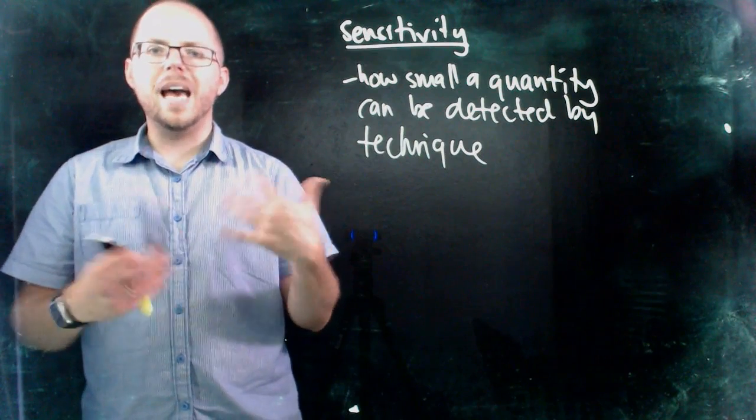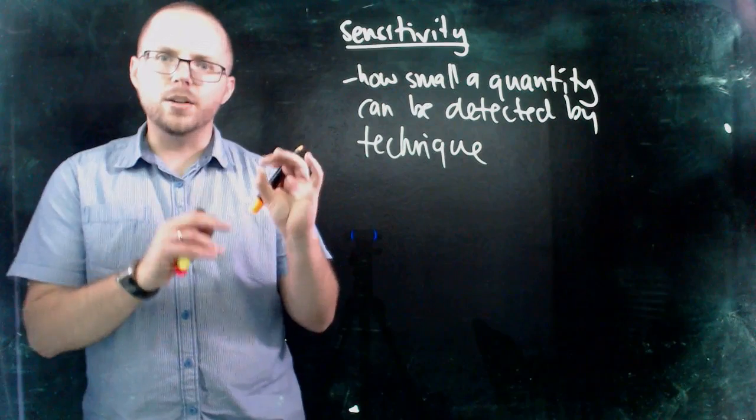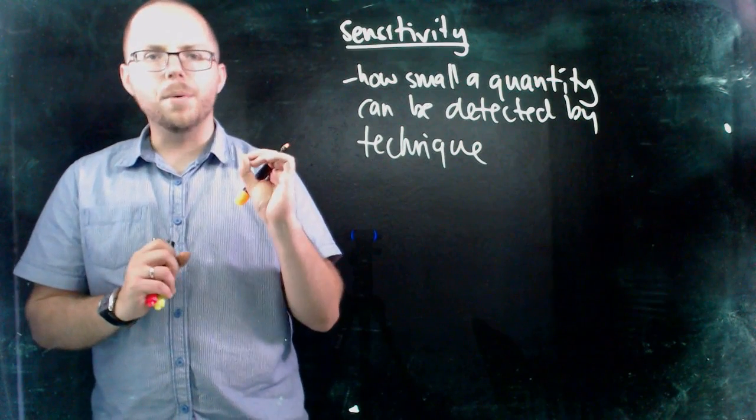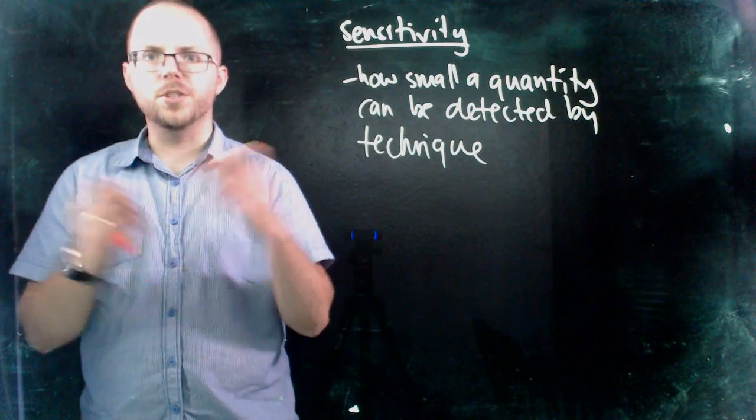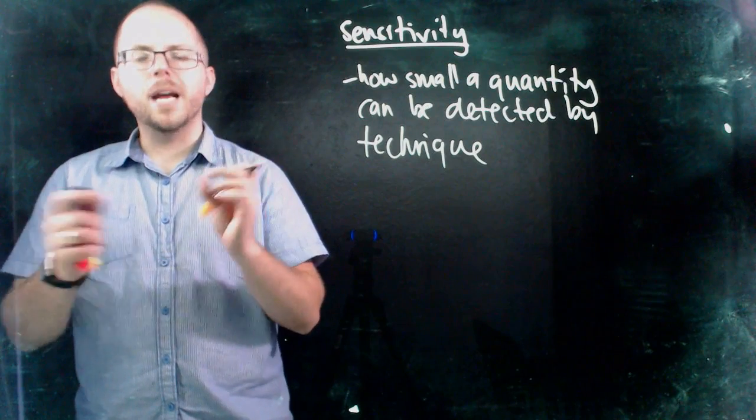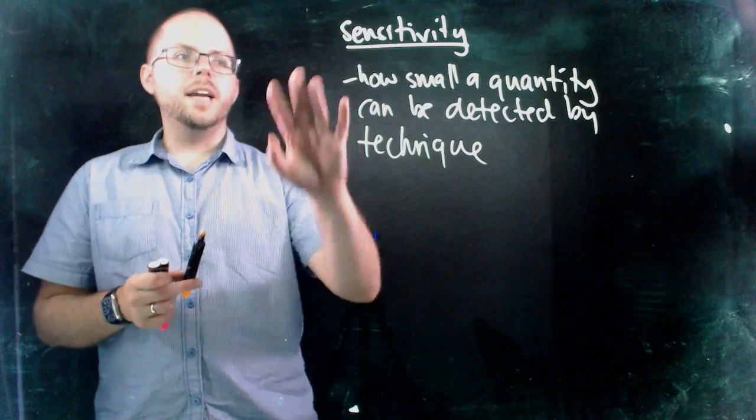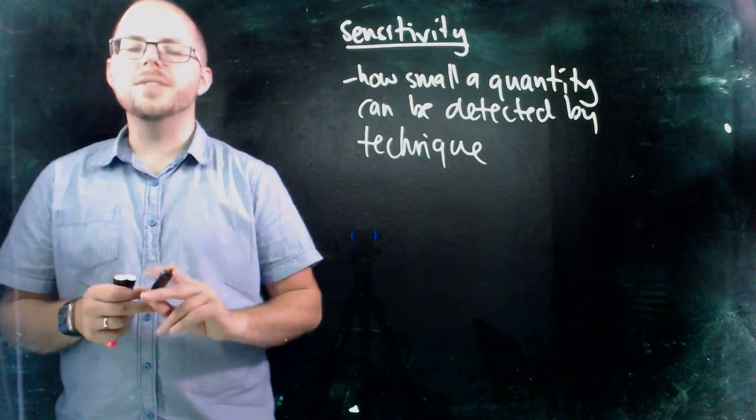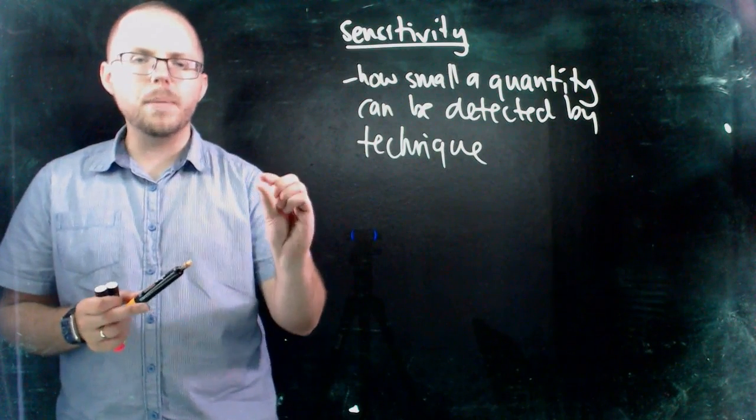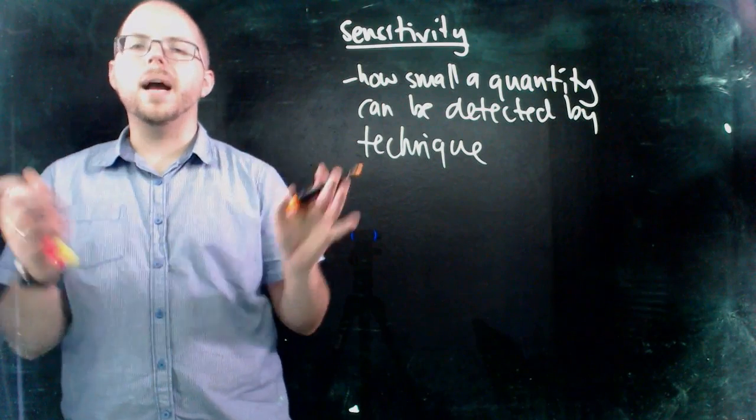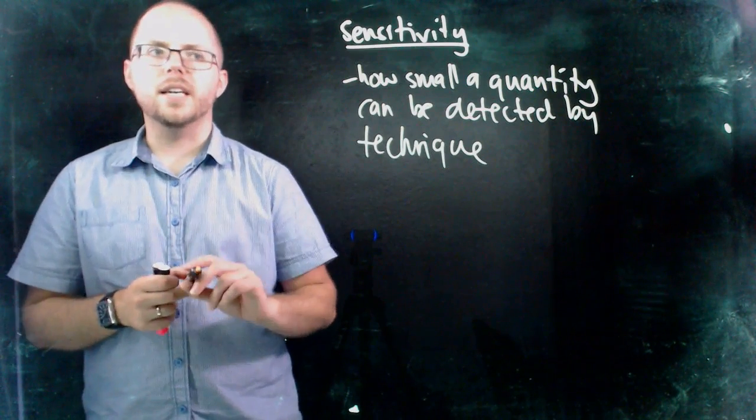But when you start to add in other complex components, or you're starting to look for really small levels, like a whisper in a restaurant as opposed to a shout, then it becomes a lot harder to pick out from the background. And so, in analytical chemistry, we're interested in how sensitive is the technique? How small an amount can we pick out, can we distinguish from the background because of this technique?